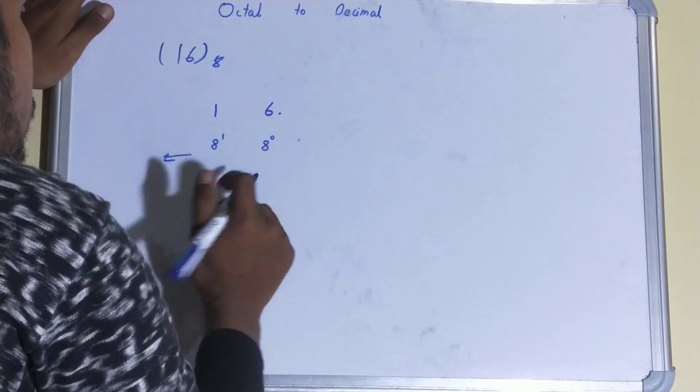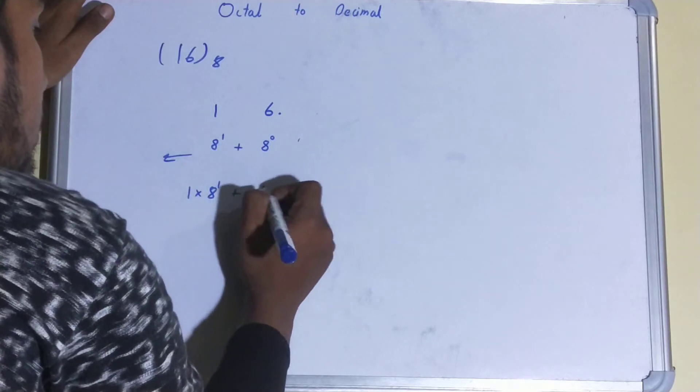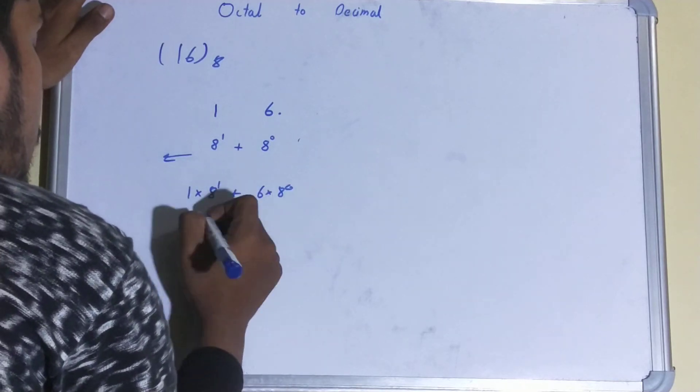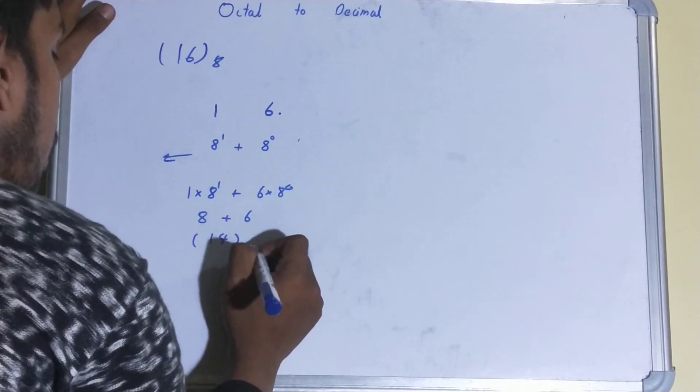That is 1 into 8 to the power of 1 plus 6 into 8 to the power 0. So it will be 8 plus 6, that is 14 base 10. So this is your decimal equivalent of your octal equivalent.